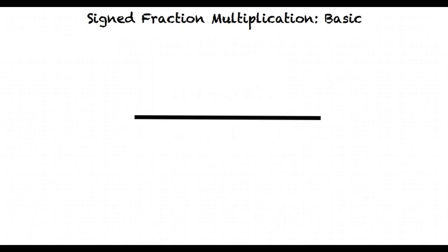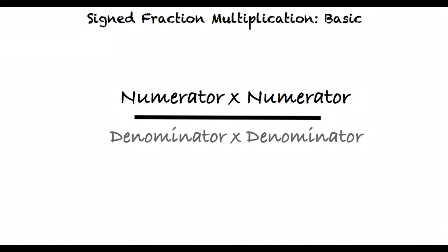To multiply fractions, we multiply the numerators together to get the numerator of our answer, and we multiply the denominators together to get the denominator of our answer.